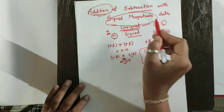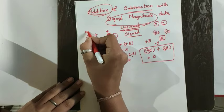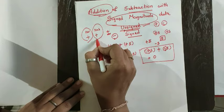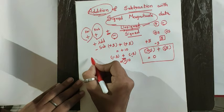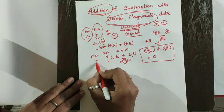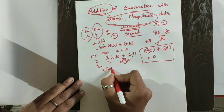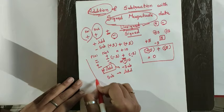What we need to keep in mind is: if the signs of both numbers are the same, then the same operation will be performed, whether it is addition or subtraction. But if the signs are different — number 1 is negative and number 2 is positive, or vice versa — then if you are performing addition, the reverse operation, subtraction, is performed. And if you are performing subtraction, then addition will be performed. This is what we need to keep in mind when working with sign magnitude data.